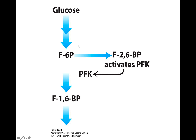Gluconeogenesis and glycolysis are regulated so that within the cell, one pathway is relatively inactive while the other is highly active — this is called reciprocal regulation. Glycolysis predominates when glucose is abundant, converting it to pyruvate. Gluconeogenesis is highly active when glucose is scarce. One key step regulates this: the interconversion of fructose 1,6-bisphosphate and fructose 6-phosphate.